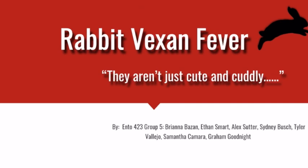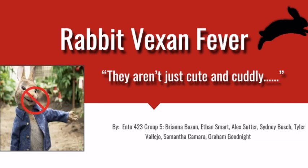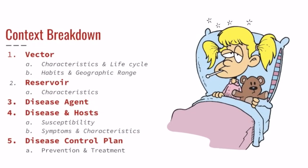We're going to be talking about rabbit vets and fever. We're going to be explaining how our reservoirs aren't just cute and cuddly. For our presentation, we're going to break it down and first talk about the vector, the characteristics and lifestyle, the habits and the geographic range, our reservoir and its characteristics, the disease agent, the disease and the host, susceptibility, symptoms and characteristics of the disease, and lastly our disease control plan — how to prevent and treat this disease.